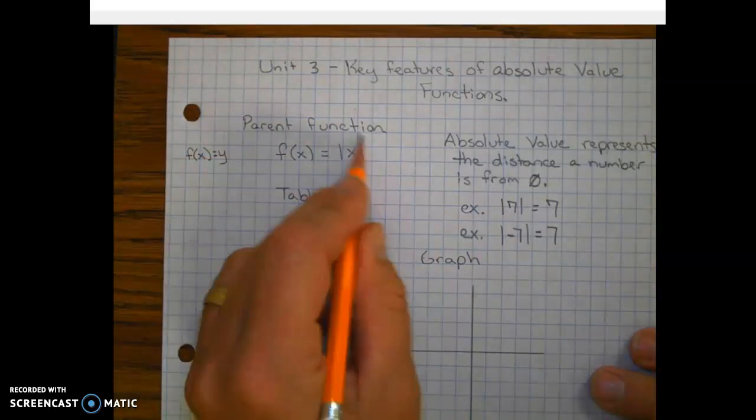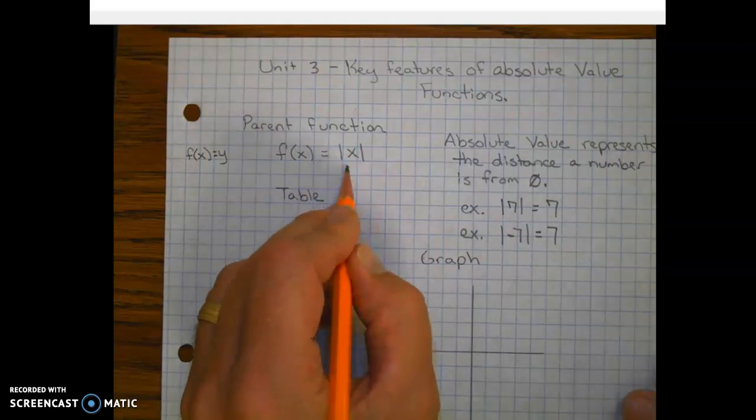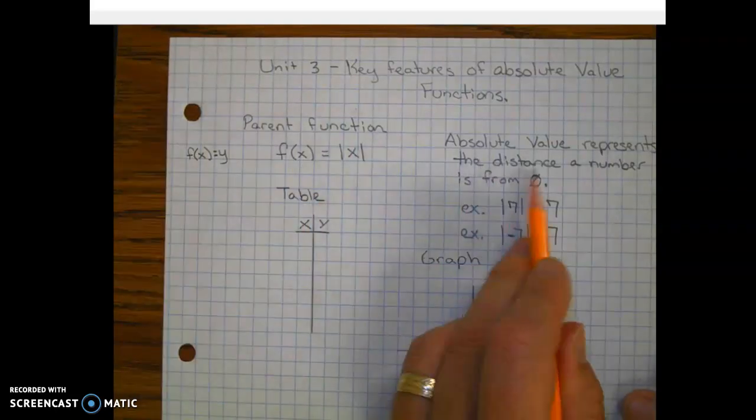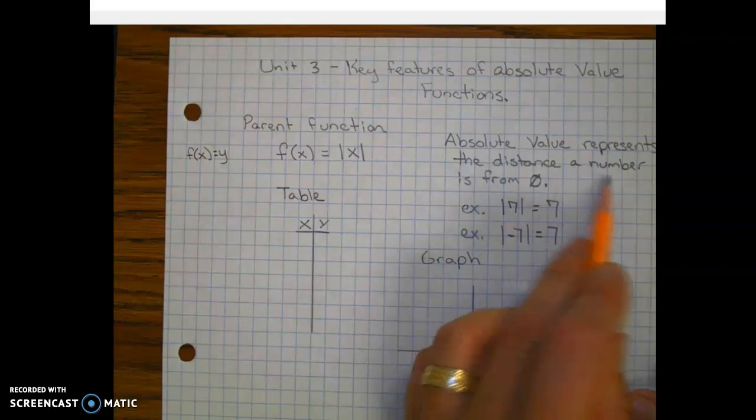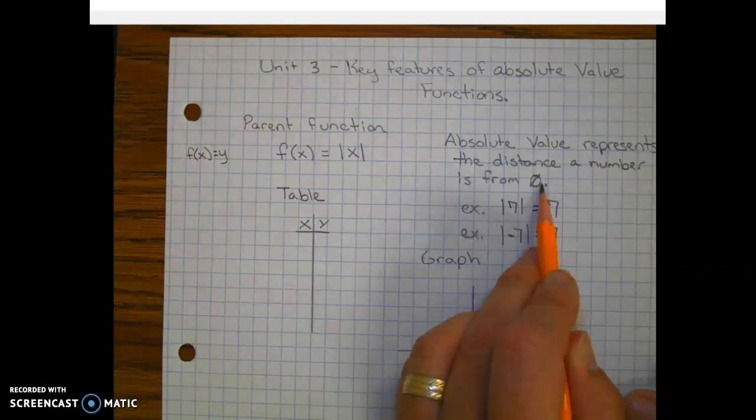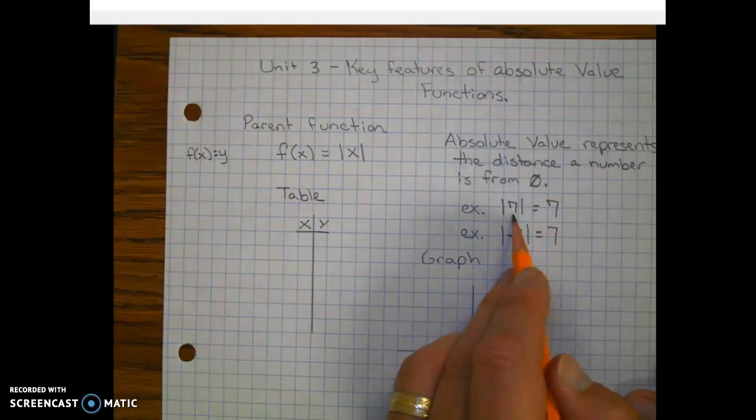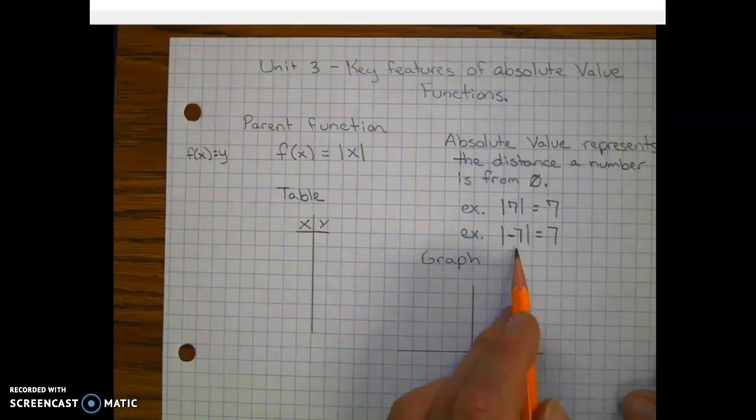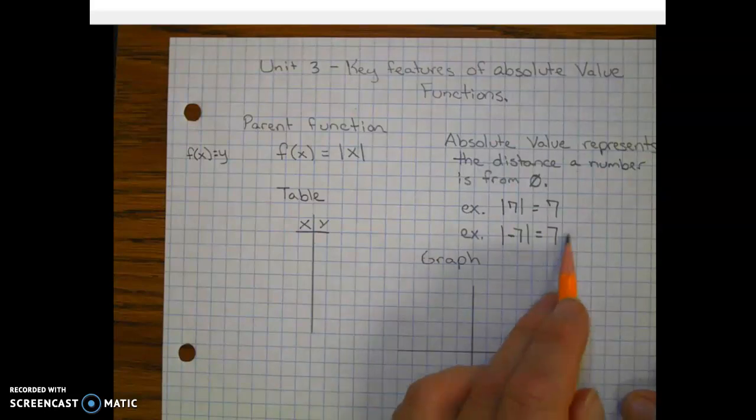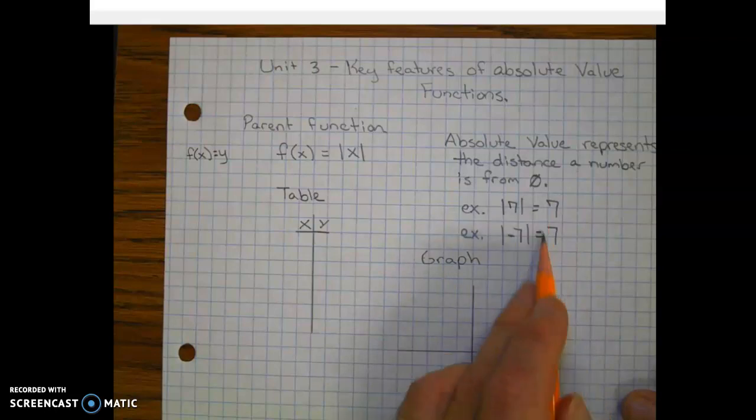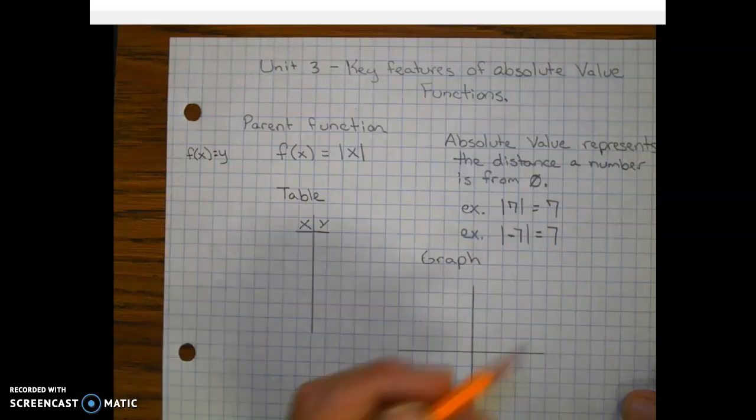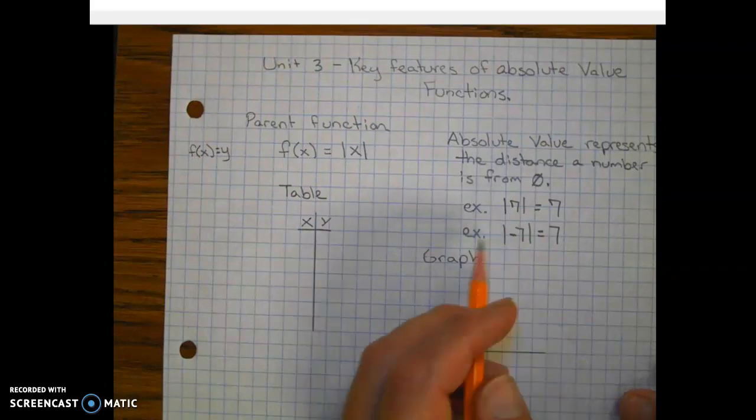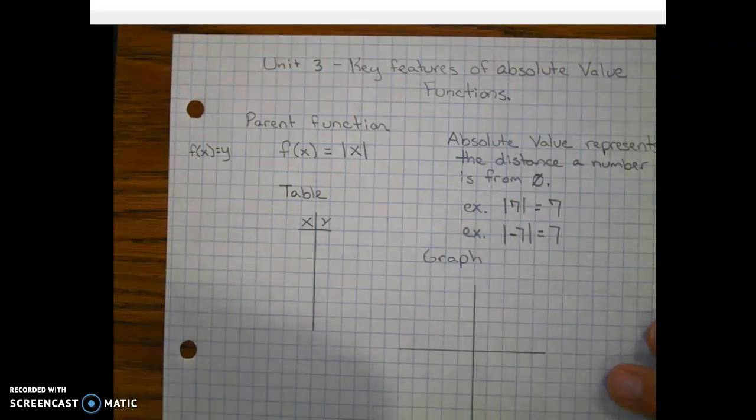So a little background in case you've forgotten what absolute value does. Absolute value represents the distance a number is from zero. So if you were looking on a number line, the absolute value of seven is equal to seven, since seven is seven units from zero. The absolute value of negative seven is also seven units from zero. Notice that our result in both cases are positive because distance for the most part is represented as a positive number.